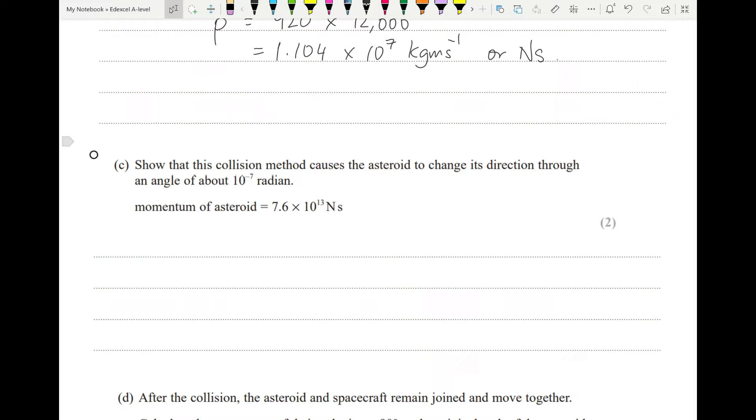Show that this collision method causes the asteroid to change its direction through an angle of about that many radians. First things first, we put our calculator in radians if it's not in there already. Now let's go back to our vector diagram. We had asteroid, we had spacecraft, and we had resultant. And now we've got 1.104 times 10 to the 7 is our momentum over there. And 7.6 times 10 to the 13 is our momentum there, and we want this angle. As soon as you start labeling that, you realize that we're going for tan theta is 1.104 times 10 to the 7. It's always better to use your calculated value rather than the given value. 7.6 times 10 to the 13. That gives us an angle of 1.45 times 10 to the minus 7 radians, as we were asked to do.